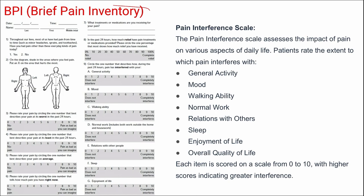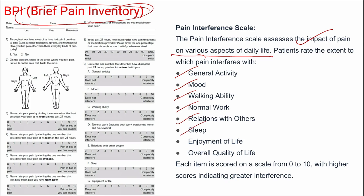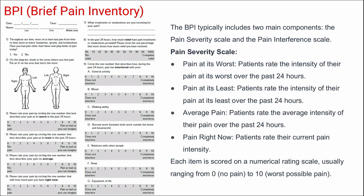The Brief Pain Inventory (BPI) assesses the impact of pain on various aspects of daily life including general activity, mood, walking ability, normal work, relations with others, sleep, enjoyment of life, and overall quality of life. Each item is scored 0 to 10, with higher scores indicating greater interference. BPI includes two main components: the pain severity scale — measuring worst, least, and average pain and pain right now over 24 hours — and the pain interference scale.